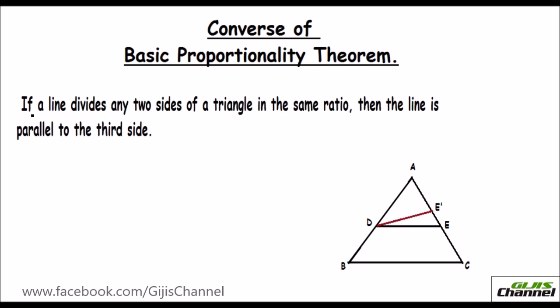So here they say: if a line divides the two sides in the same ratio — both sides, it should be the same ratio — in that case the line is parallel to the third side. We need to note down two aspects: what is given, and what you need to prove.